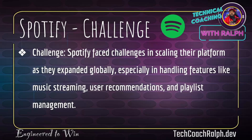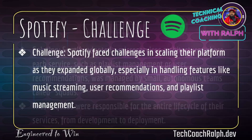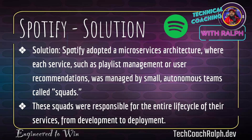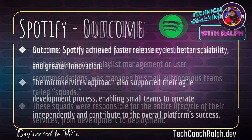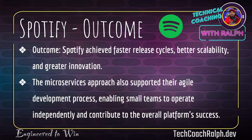Finally, Spotify faced challenges in scaling their platform as they expanded globally, especially in handling features like music streaming, user recommendations, and playlist management. Spotify adopted a microservice architecture where each service — such as playlist management or user recommendations — was managed by small autonomous teams called squads. These squads were responsible for the entire lifecycle of their service from development to deployment. Spotify achieved faster release cycles, better scalability, and greater innovation. The microservices approach supported their agile development processes, enabling small teams to operate independently and contribute to the overall platform success.